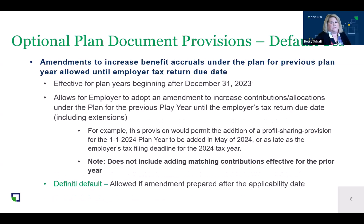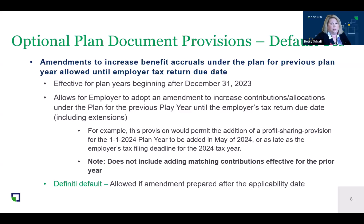Another thing DFINITY is permitting: if you wanted to amend your plan to increase a benefit retroactively, that can be done under SECURE 2.0 with limitations. For example, if a 401(k) plan wanted to adopt a profit-sharing provision it did not currently have in May of 2024, they could do it as late as the tax filing deadline for the plan sponsor. Note you cannot retroactively amend to add matching contributions. The DFINITY default says this is allowed if amendments are prepared after the applicability date of 12-31-2023.